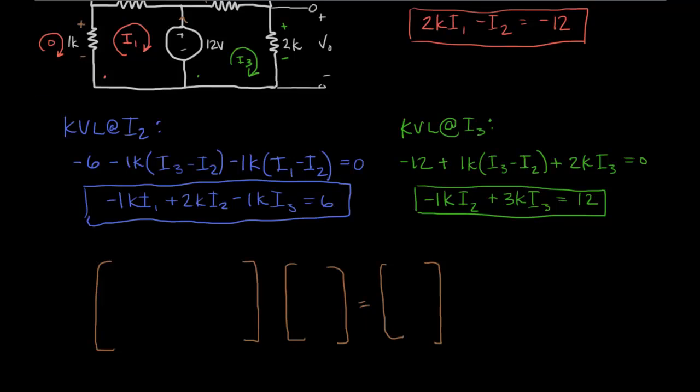Here I'm going to have the coefficients. We'll start with KVL at I1. For I1 we had 2, for I2 we had negative 1, and for I3 we have 0. And then over here we get negative 12. Now for equation 2 we had negative 1, 2, negative 1, and 6. For equation 3 we get 0 because there is no I1, right? Negative 1 and 3. This equals 12. And what we're going to be solving for is I1, I2, and I3.